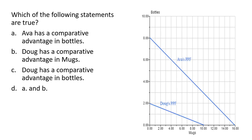Let's see which of the following statements are true here, identifying who has a comparative advantage in which good. Statement A: Ava has a comparative advantage in bottles. Every time Ava produces a bottle, she gives up 16 divided by 8, or 2 mugs. For Doug, every time he produces a bottle, he gives up 10 divided by 2, or 5 mugs. So Ava does have a comparative advantage in bottles — she gives up fewer mugs. Statement A is true.